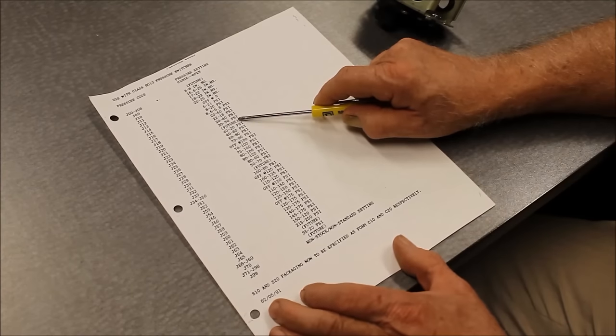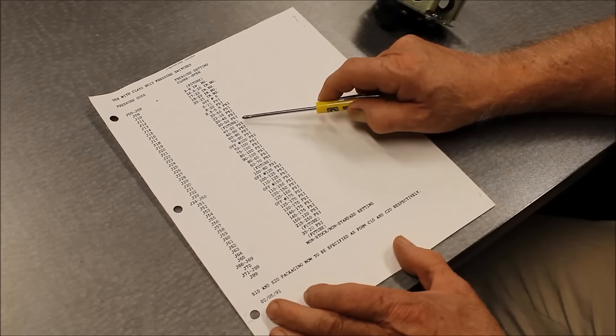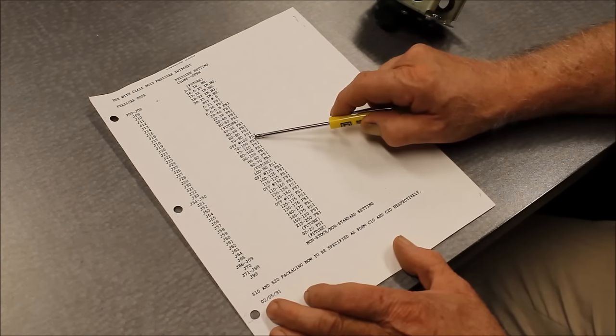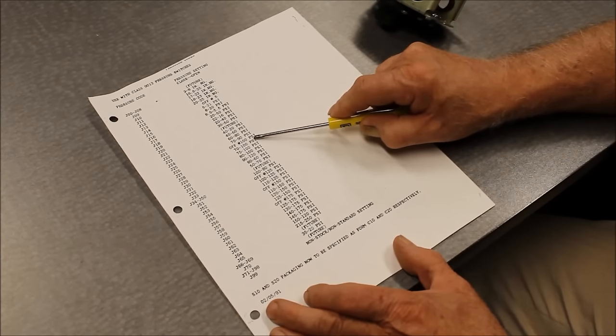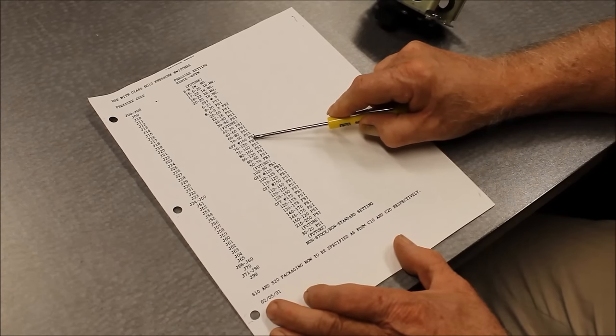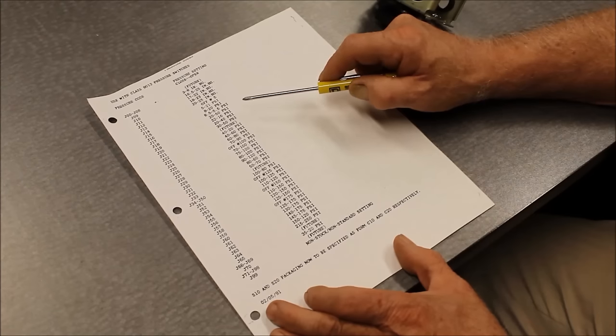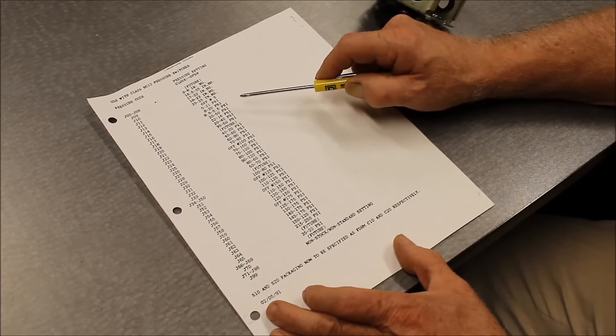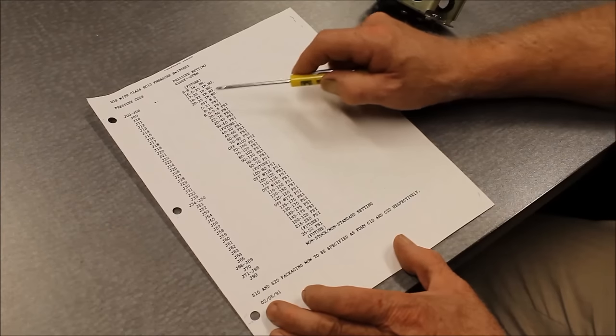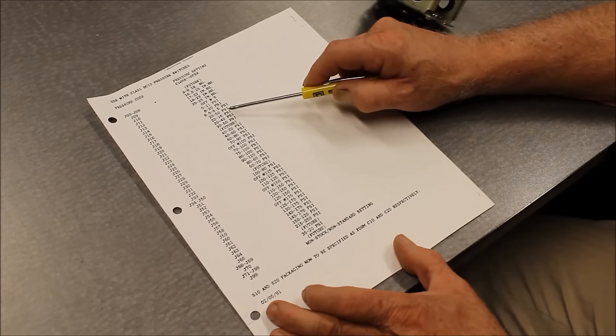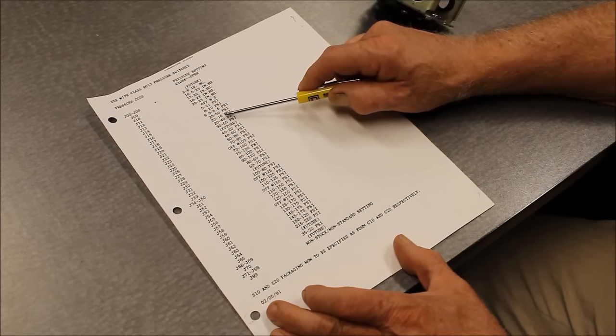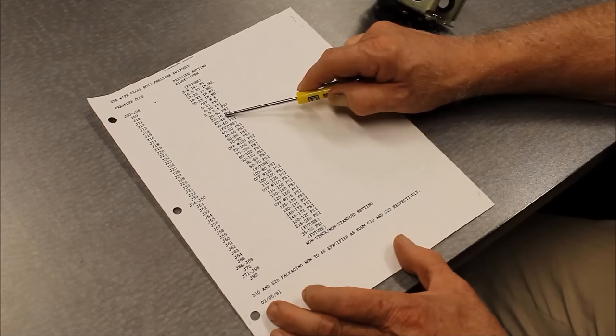If we have a switch with a single adjustment, a non-adjustable differential, we only have one pressure setting, for instance the off at 100, which identifies a non-adjustable differential. The other issue we have is in a reverse action device, where the pressures are actually in reverse. In other words, the turn-on point is higher than the turn-off point, and the J code must reflect that.